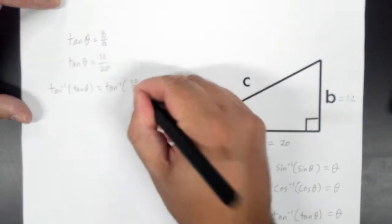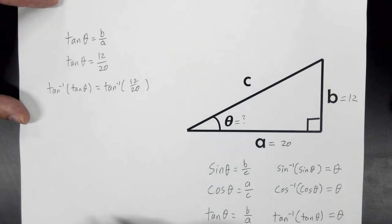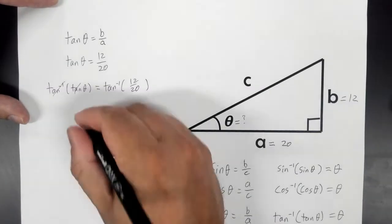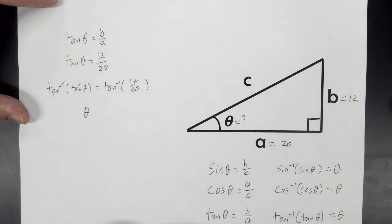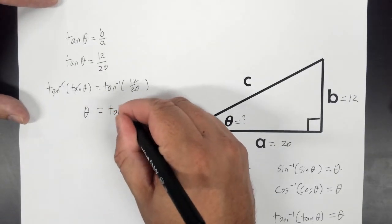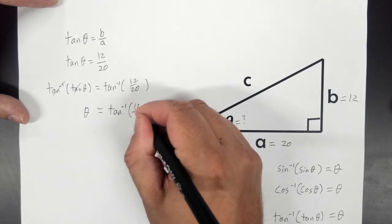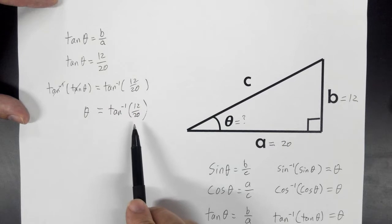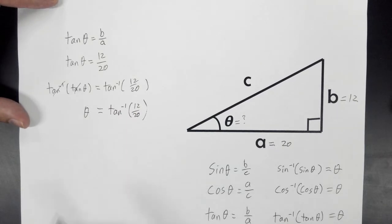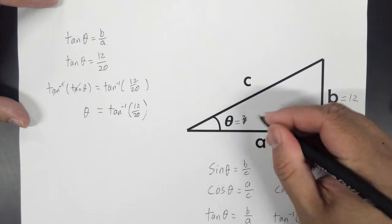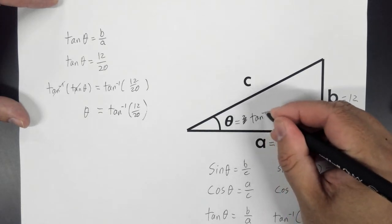So I'm going to put everything on the right side of the equation into this parentheses: 12 over 20. And when I do that, the inverse tangent and the tangent cancel out. And you just get theta, which is our unknown angle on this side. And on the right side, nothing cancels out. But the good news is this is something that you could put in a calculator and find an actual number. So our angle would equal inverse tangent of 12 over 20.